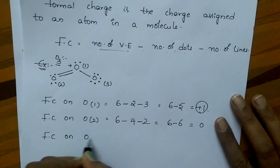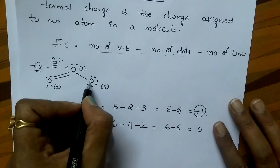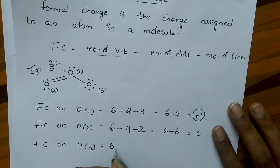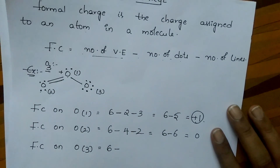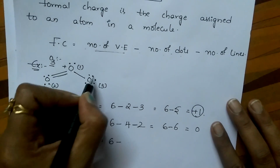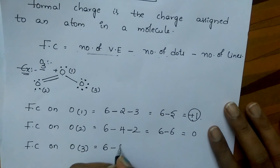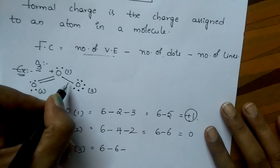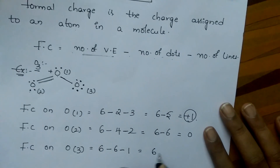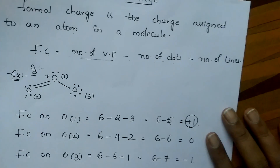The formal charge on third oxygen: valency electrons are 6, minus number of dots: 1, 2, 3, 4, 5, 6, minus number of lines: 1. So 6 minus 7 is equal to minus 1. The formal charge on this oxygen is minus 1.